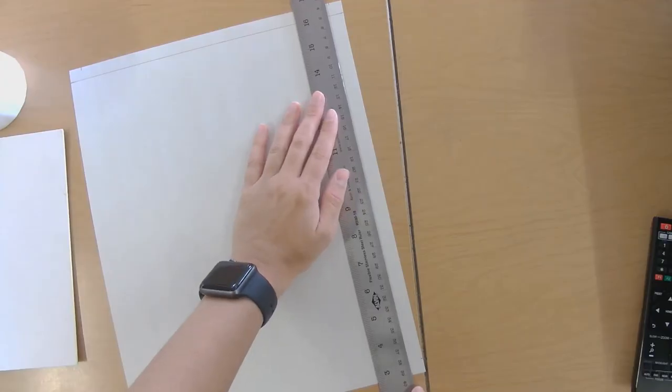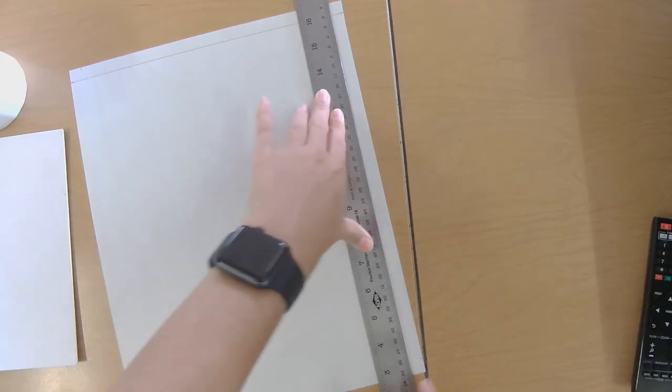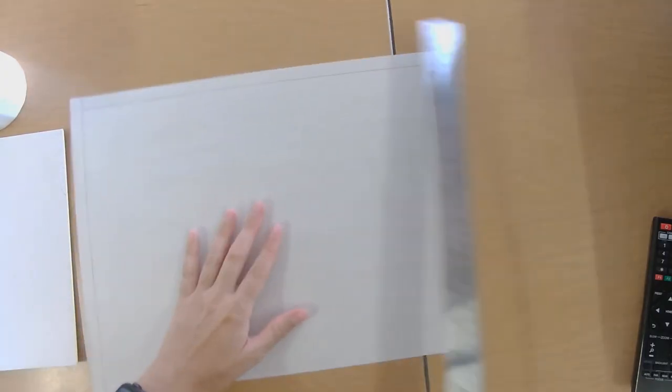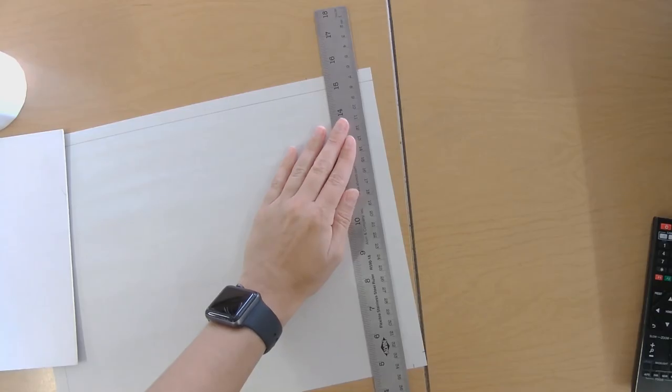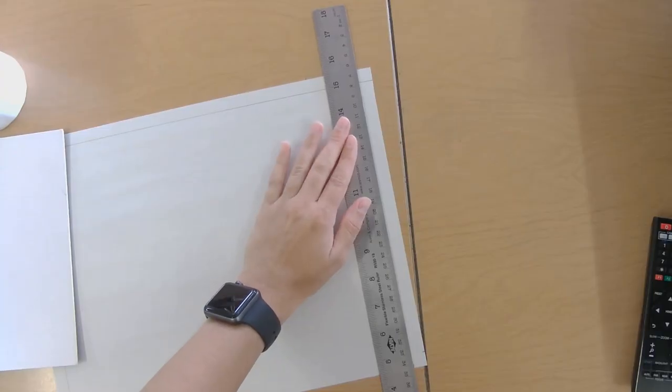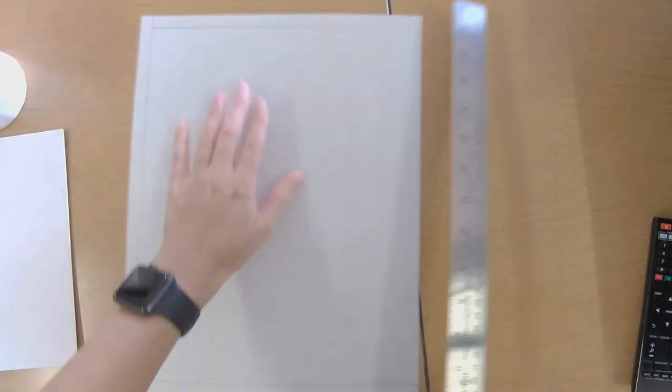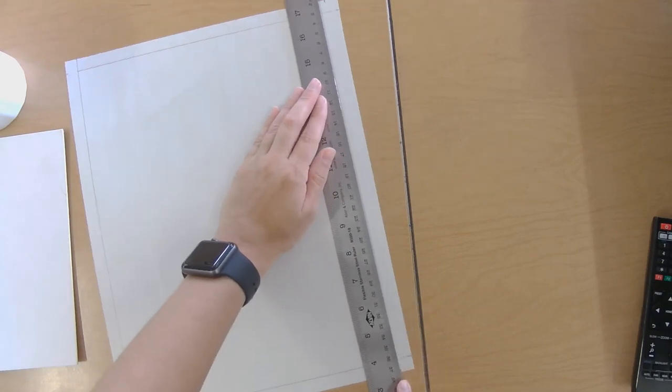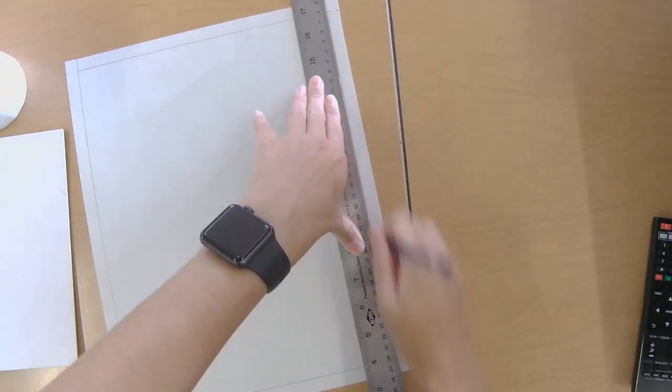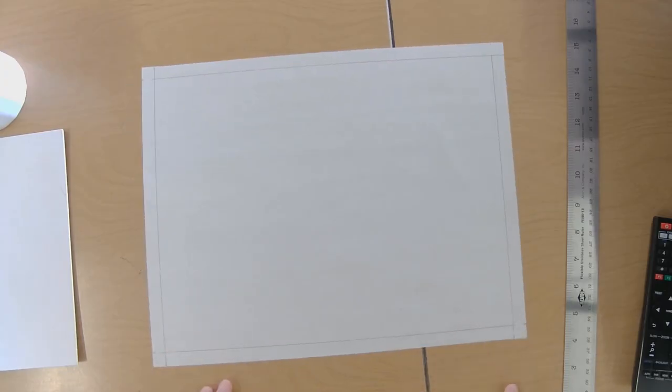So again, line up your ruler. Take some time doing this. Don't rush through this process or else your border might look a little bit wonky. Bring this across and one more and bring it across. There you go. You've got your half inch border.